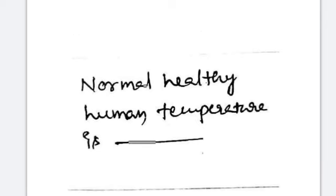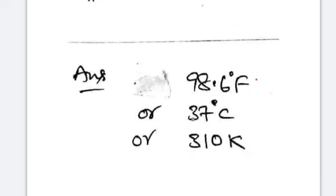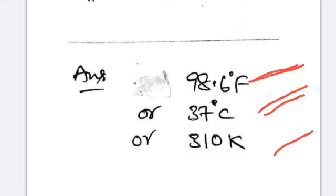The normal healthy human body temperature is: 98.6 degrees Fahrenheit, 37 degrees centigrade, and 310 Kelvins.